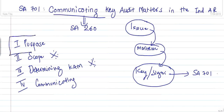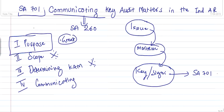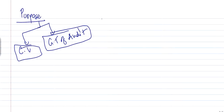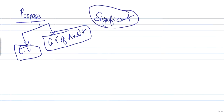What is the purpose of SA-701? The purpose is to enhance the communicative value of the audit. It provides greater transparency of the audit work performed, allowing the auditor to say: based on my professional judgment, these are the significant matters I identified.